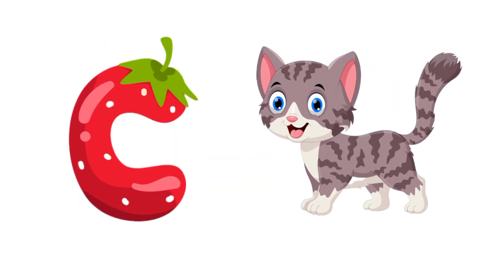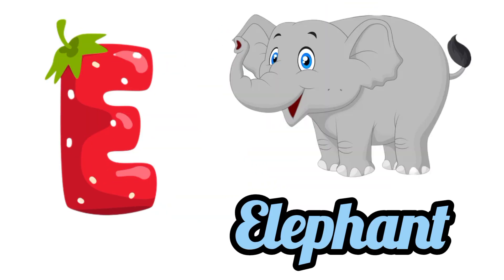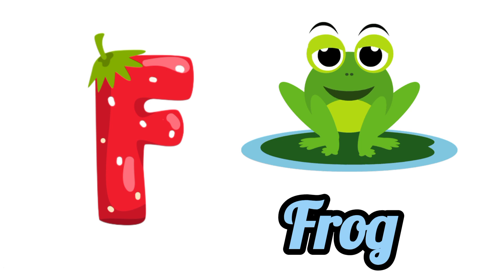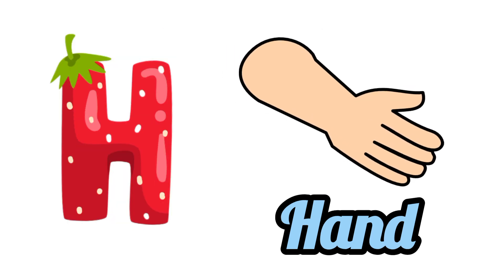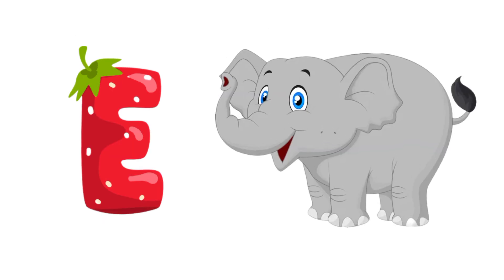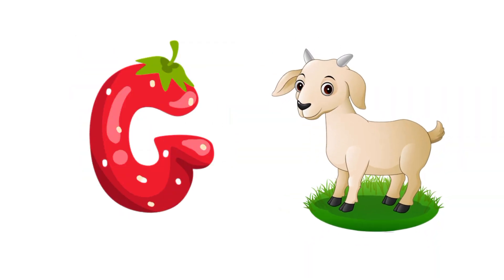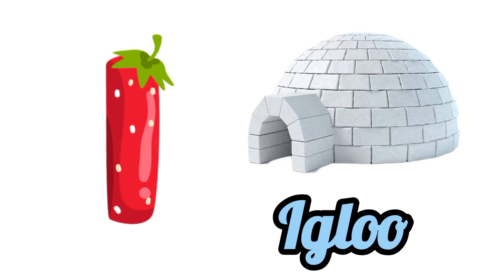E is for Elephant. F is for Frog. G is for Goat. H is for Hand.